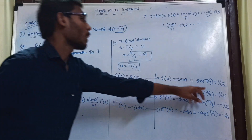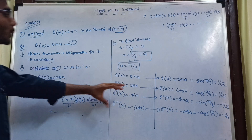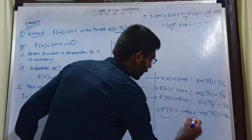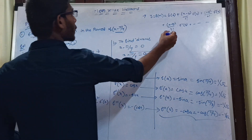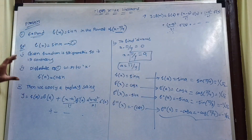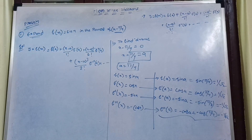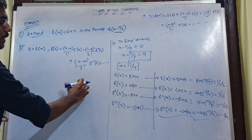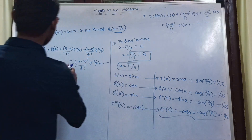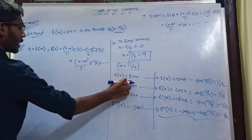So we have the values: f(π/4) = 1/√2, f'(π/4) = 1/√2, f''(π/4) = −1/√2, f'''(π/4) = −1/√2. We have done these equations, so now we substitute into the Taylor series expansion.